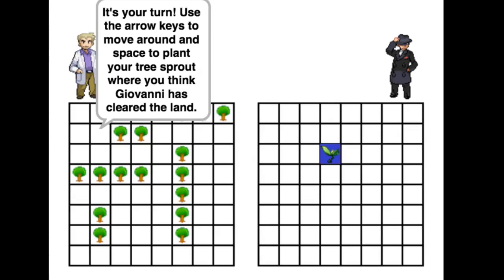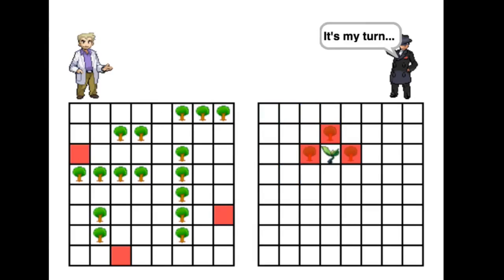In this playthrough, we chose hard mode. On the player's turn, they use arrow keys to move and space to plant a tree.